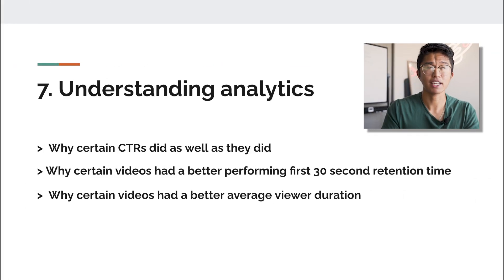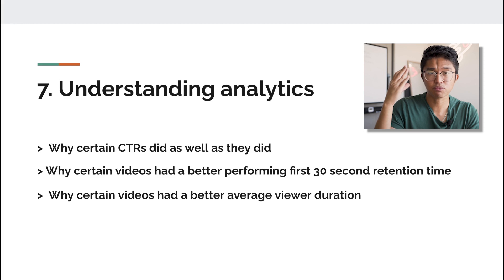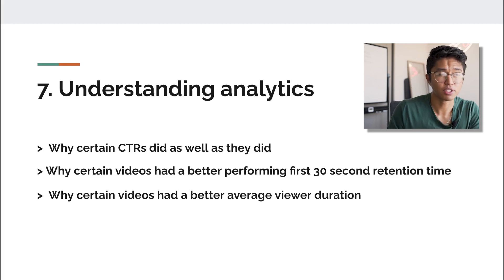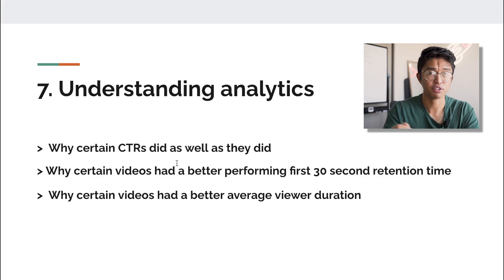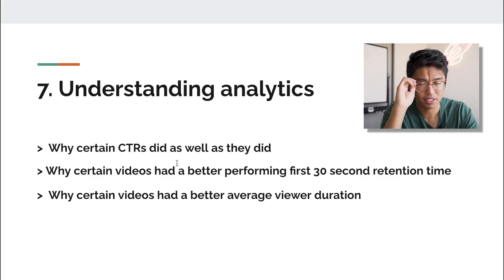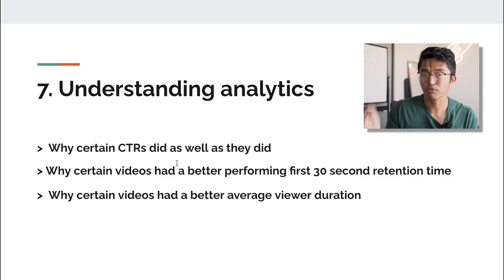The seventh thing that's led me to making over $370,000 a year from YouTube is understanding my analytics. I really try to understand why certain click-through rates do better than others — this comes from thumbnail templates like the split screen style or the breaking news style. I also try to understand why certain videos had better performing first-30-second audience retention. The first 30 seconds is extremely important: if you can get people to watch past the first 30 seconds, they're more likely to watch the rest of the video.